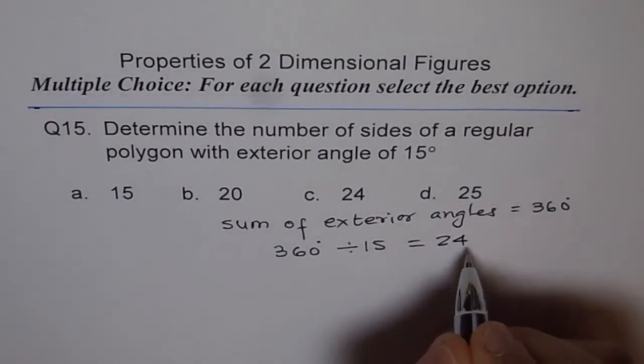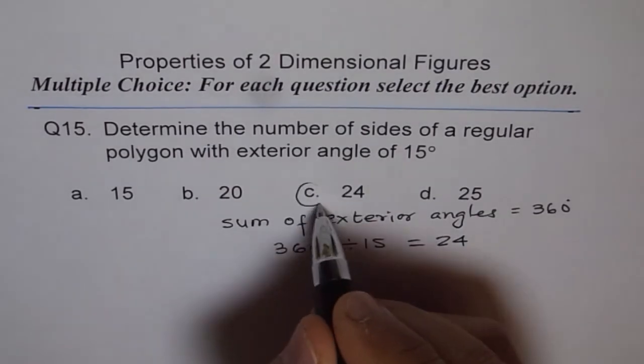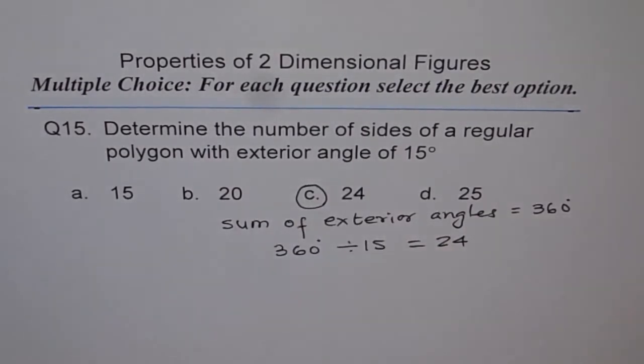So, this polygon has 24 sides. So, that is the choice. You do this work on the side and then make a choice. That awareness will give you more importance, will help you understand these questions and the subject. Thank you.